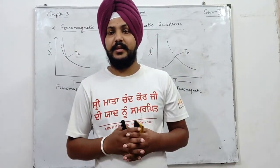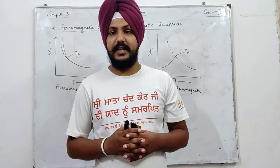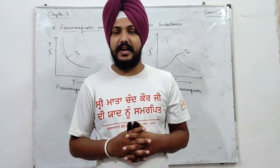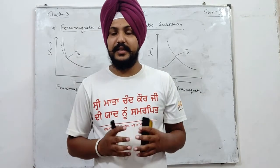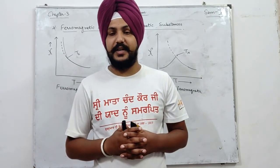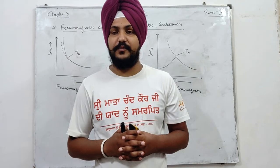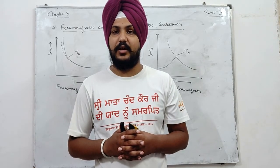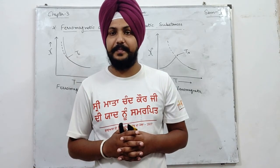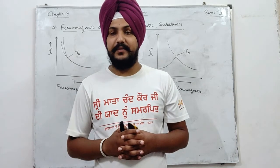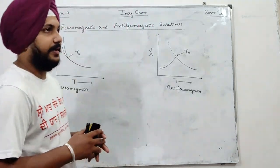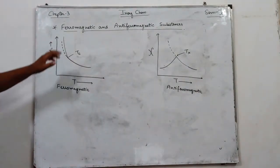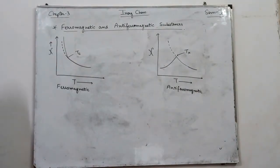Hello to all of you. Last lecture में हमने discuss किया था magnetic moment की values को calculate करने के तरीके, जिसमें मैंने आपको तीन particular तरीके बताए थे: spin only formula, spin orbit formula और spin orbital coupling formula. Magnetic moment की values को calculate करने के बाद आज हम नया topic discuss कर रहे हैं जो है magnetic behavior of ferromagnetic and anti-ferromagnetic substances.